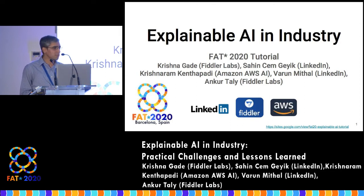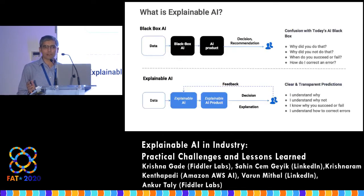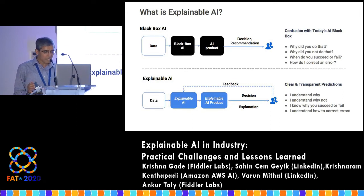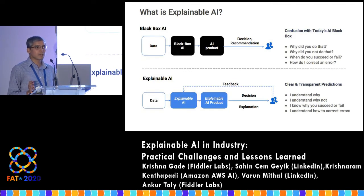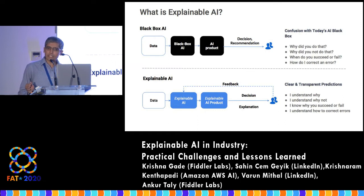Let's start with what we mean by explainable AI. Today, machine learning models have become very complex — deep neural networks with several layers, or even simpler models with lots of parameters — and it has become quite often very difficult to explain the predictions of a machine learning model. When the AI system behaves like a black box, it's challenging for users to understand why the model made some prediction, why it didn't make a certain other prediction, what the failure modes are, how to improve the model, or how to recover from failures.